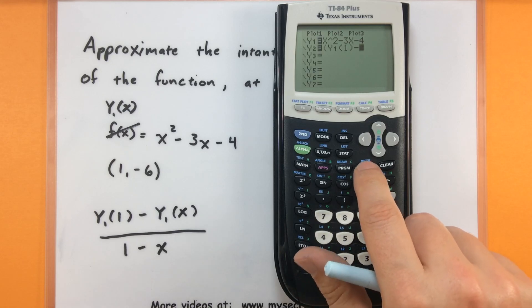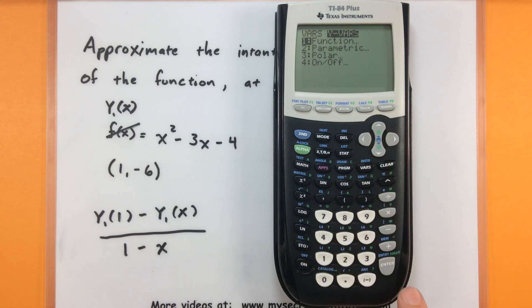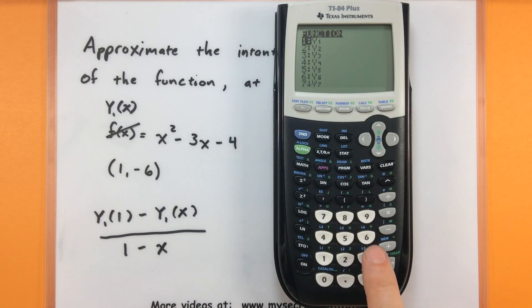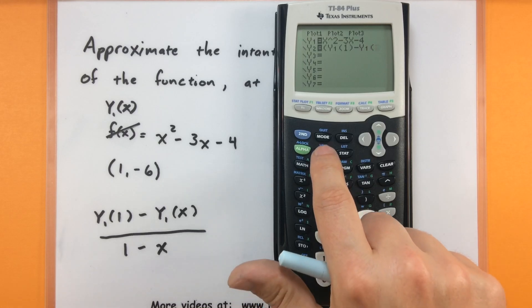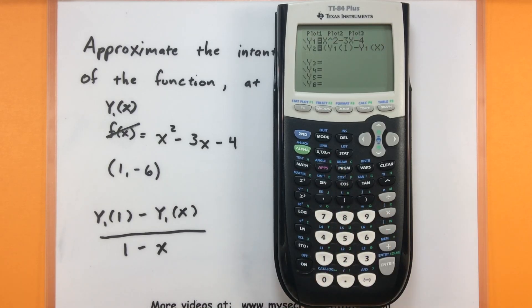And we'll put a y1 and we'll feed x into it. So again that's under variables. Arrow over to y variables. 1 for function. And y1. Only this time we'll open up a set of parentheses and just put an x on the inside. So I used a set of parentheses when I was starting this process. Let's go ahead and put another set to close the process. That'll take care of everything on the top of my slope formula.